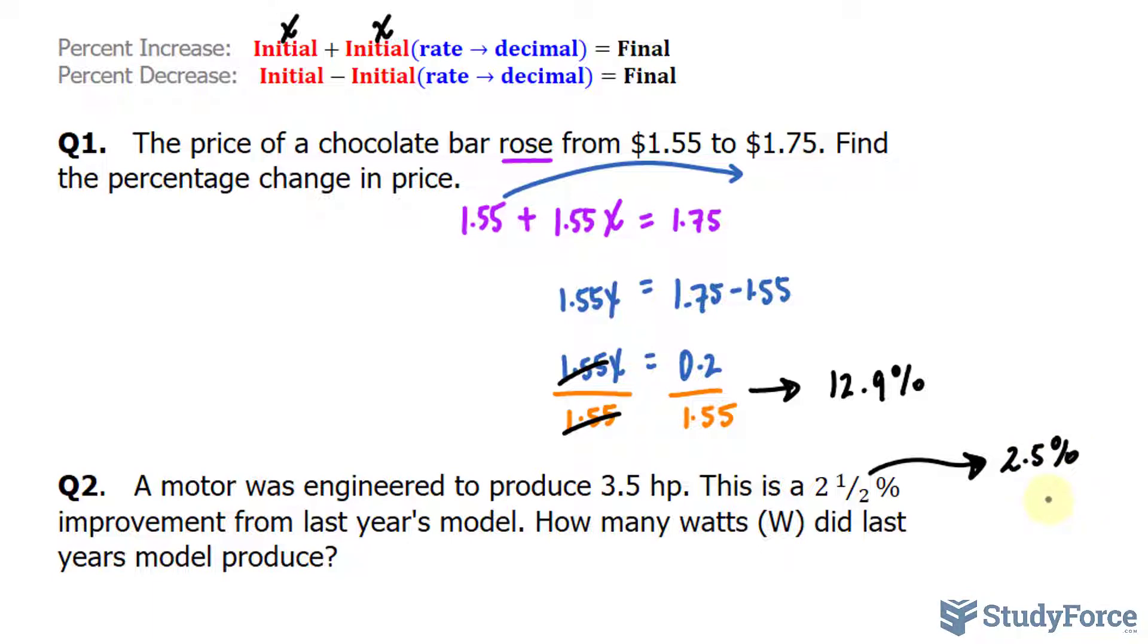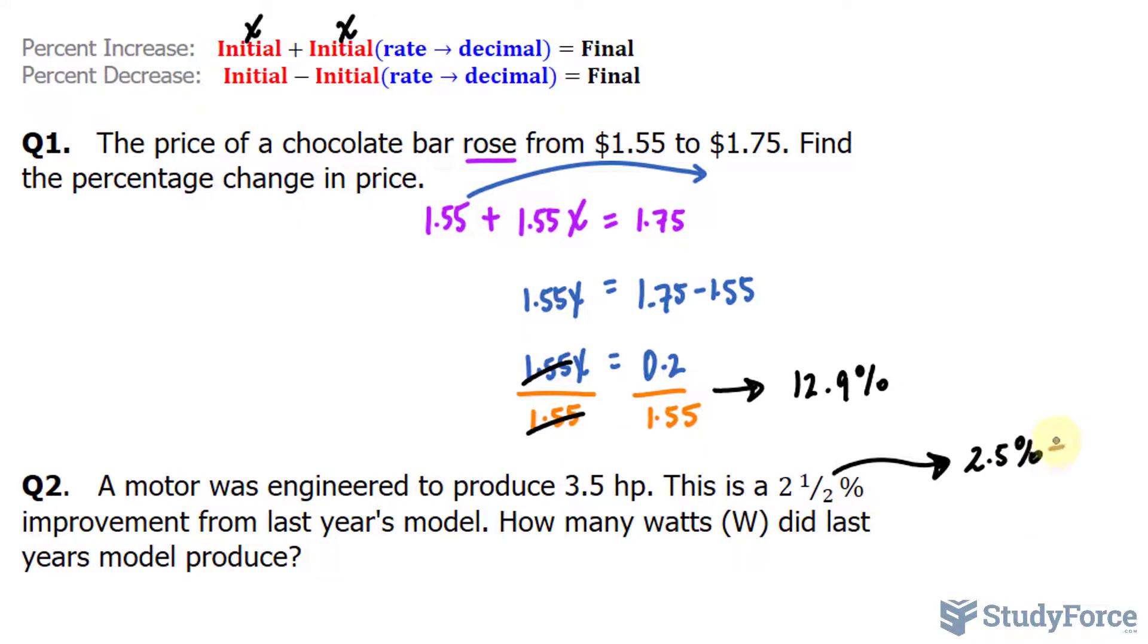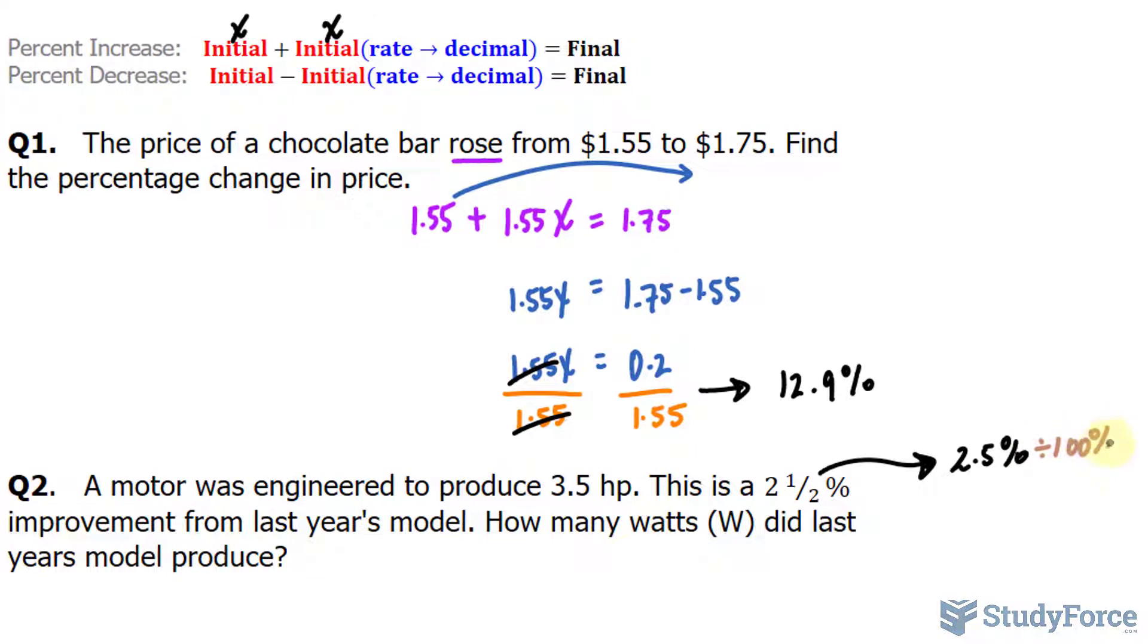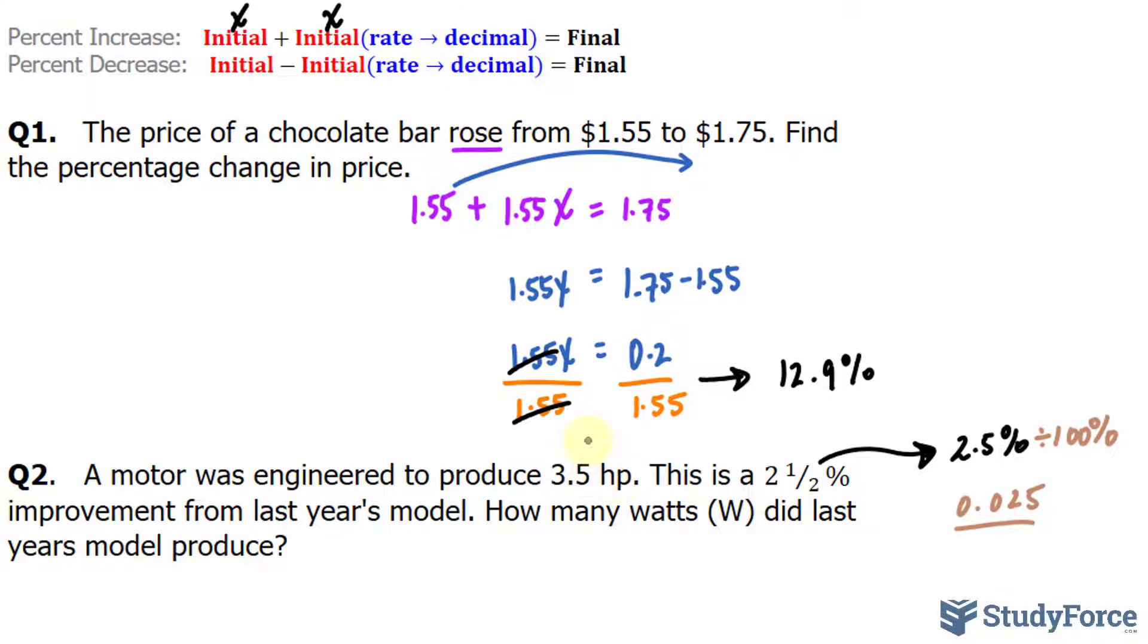2.5 is the same thing as saying 2.5%. And you need to make your percentages into decimals. So, we divide this by 100%. When you divide this by 100%, you end up with 0.025. So, that number will go in place of what we see in blue. The final is 3.5. Our equation will look like this. x plus x times 0.025 is equal to 3.5.